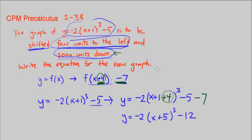So this is our graph now, shifted 4 units to the left, 4 units to the left and 7 units down. And here is the equation. So this ends CPM Chapter 2, number 38.